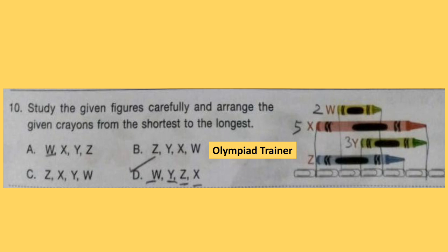Question 10. Study the given figures carefully and arrange the given crayons from the shortest to the longest. Crayon W has 2 units length, crayon X has 5 units, crayon Y has 3 units, and Z has 4 units. Arranging from shortest to longest: W, then Y, then Z, then X. Option D is the answer.